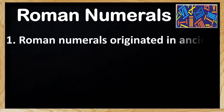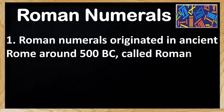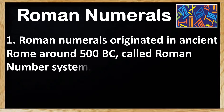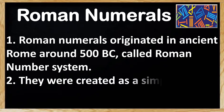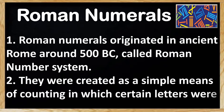Roman numerals originated in ancient Rome around 500 BC, called the Roman number system. They were created as a simple means of counting in which certain letters were given values as numerals.